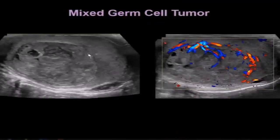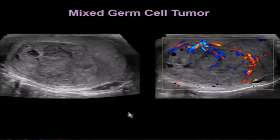This patient has a more heterogeneous mass. It has some cystic areas, some hypoechoic areas, and some brighter areas. It also has a lot of blood flow, and this proved to be a mixed germ cell tumor.